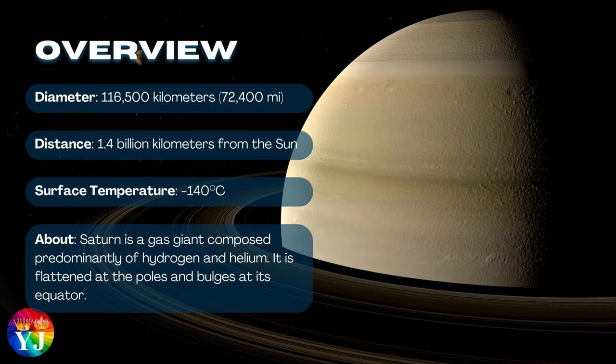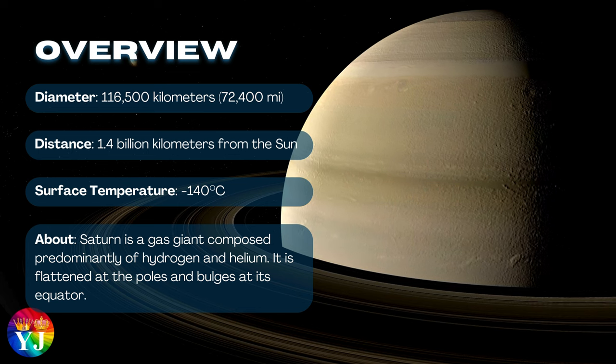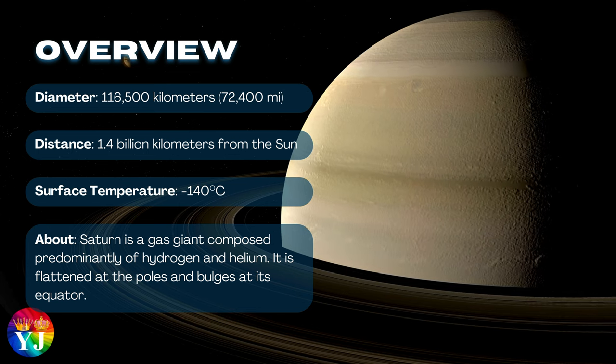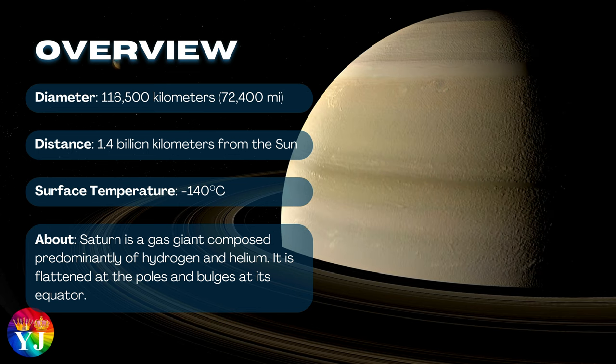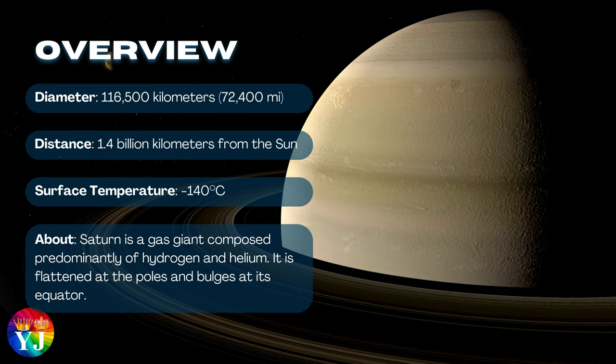About Saturn: Saturn is a gas giant composed predominantly of hydrogen and helium. It is flattened at the poles and bulges at its equator.